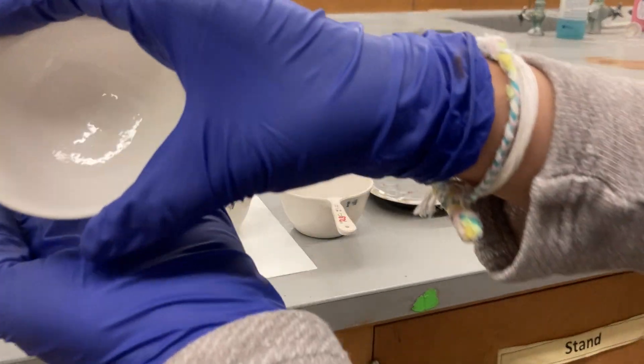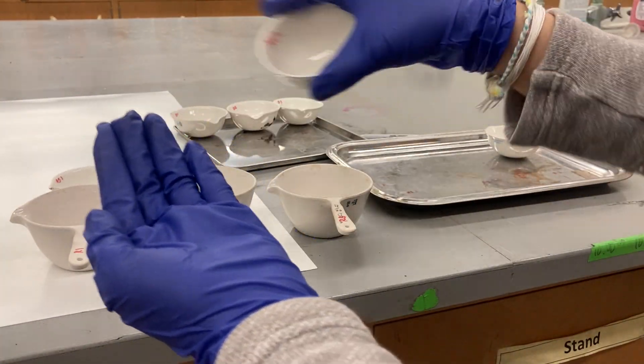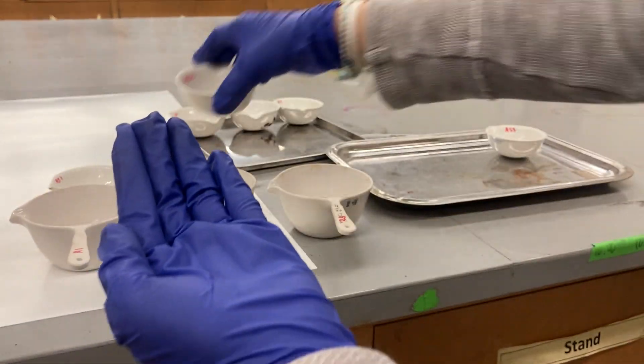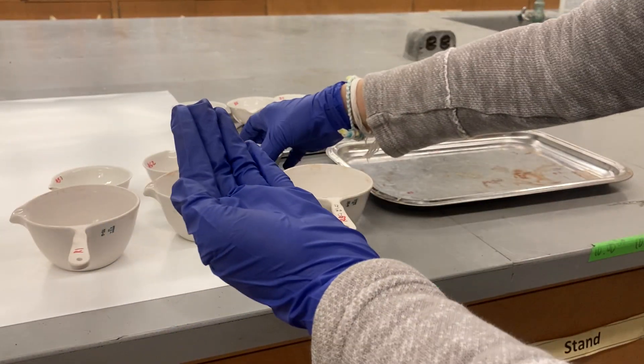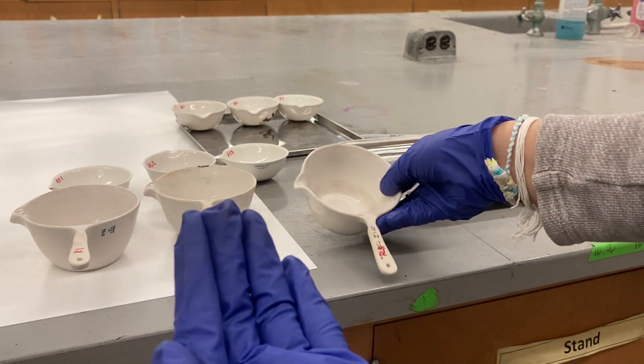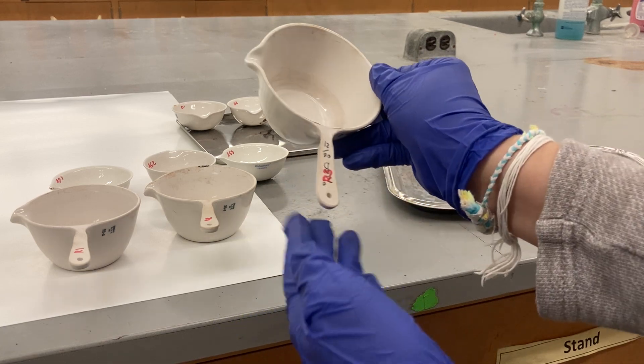Then we have activated sludge wastewater sample: A1, A2, and A3. Sometimes because we're gonna heat it at really high temperature, whatever we label on the bowl here is gonna be gone.